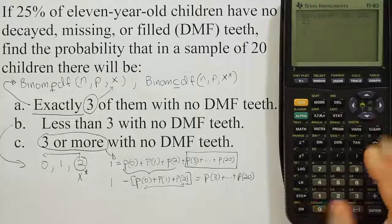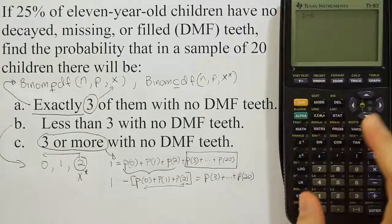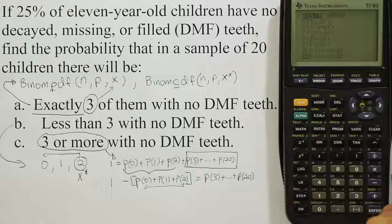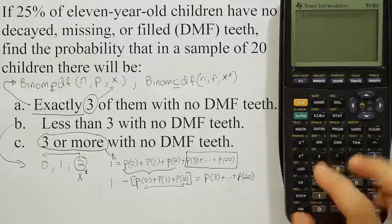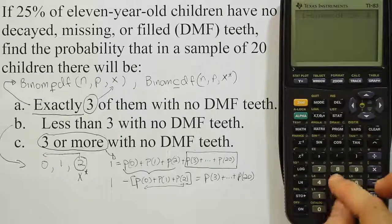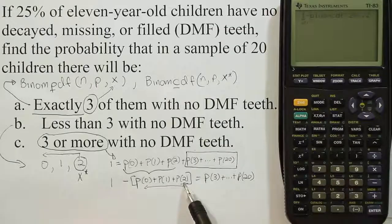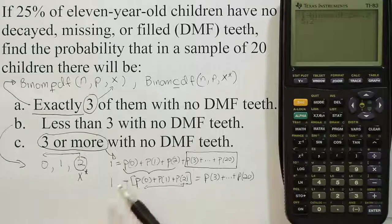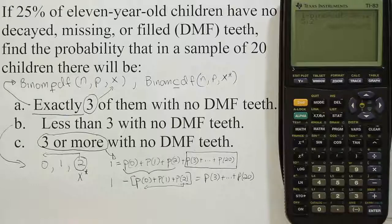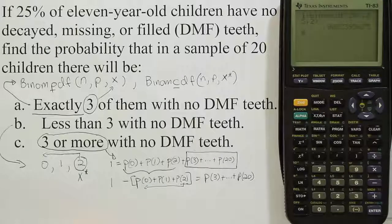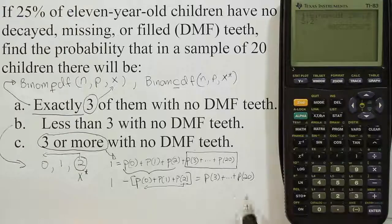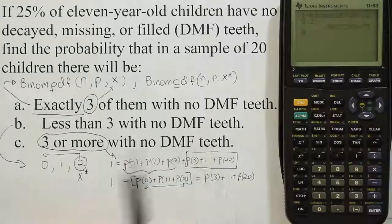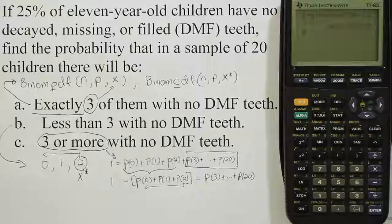I can do that all in one step in the calculator. I can do 1 minus, then I'll hit second, vars. I'll go down until I see binomial CDF. I'm going to give it the n of 20, comma, the p of 0.25, comma, and I'm going to give it this number, the 2. If I give it 2, it's going to give me the values all the way down to 0. Then because I put 1 minus before it, it's going to subtract that from 1. And we'll get the answer 0.9087 or 0.909. So that is my final solution. Basically a 90.9% chance that we'll have 3 or more kids in the study with no DMF teeth. And that's how you use your calculator to do binomial probabilities.